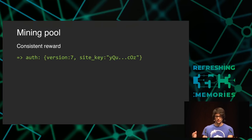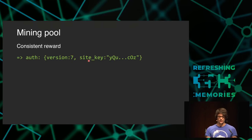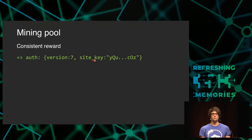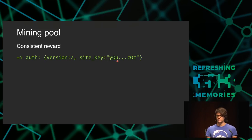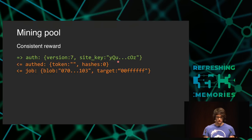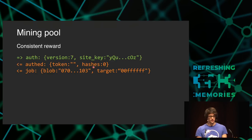Hier habe ich ein vereinfachtes Protokoll. Man sagt: ich verstehe Version 7 des Protokolls. Dieser Site-Key wird später noch relevant - damit werden die Hashes, die ich berechne, mit meinem Account verbunden, damit ich später auch bezahlt werden kann. Und dann antwortet der Pool und sagt: ja, ich kenne dich, du hast bisher null Hashes ausgerechnet.